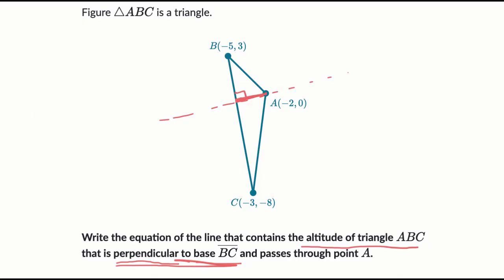So let's figure out the slope of BC. So this one right over here, I could write that M is going to be equal to change in Y over change in X. So change in Y, negative eight minus three over negative three minus negative five. So this is going to be equal to, in our numerator, we have negative 11.